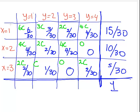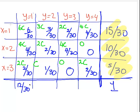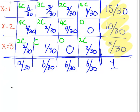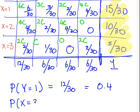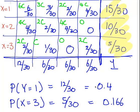So that's the marginal distribution of x. For the marginal distribution of y, we add up the column totals: 12/30 for y=1, 6/30 for y=2, 6/30 for y=3, and 6/30 for y=4. So the probability of y equal to 1 is 12/30, or 0.4, and the probability of x equal to 3 is 5/30, approximately 0.167. Those are the marginal distributions for x and y.